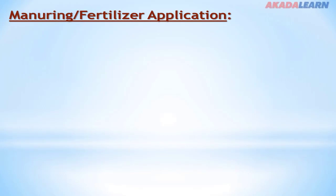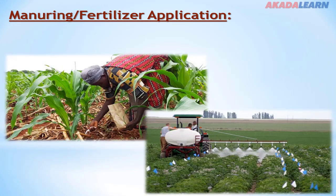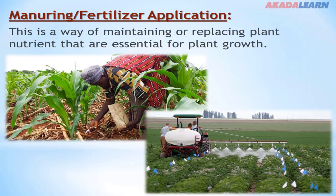Manuring or fertilizer application. This is a way of maintaining or replacing plant nutrients that are essential for crop plants. There is a need to increase the soil nutrients when cultivating crops. This will enable the crops to have essential and sufficient nutrients for their growth and development.